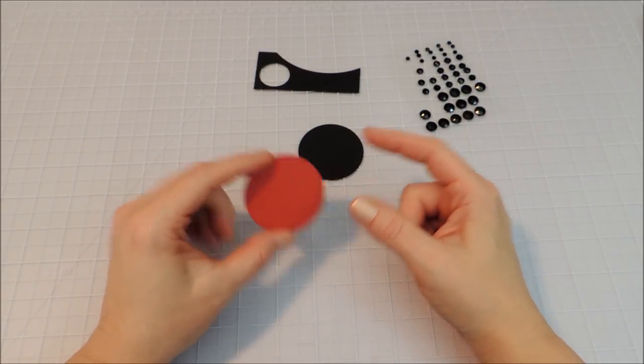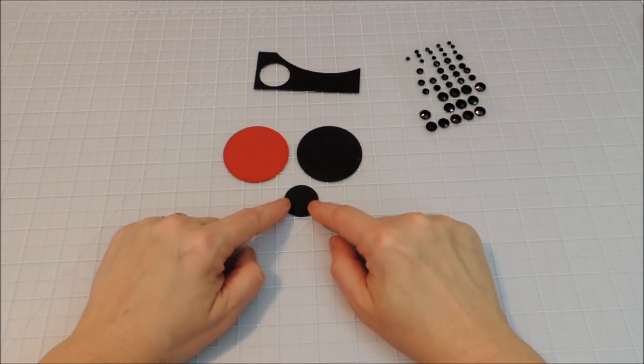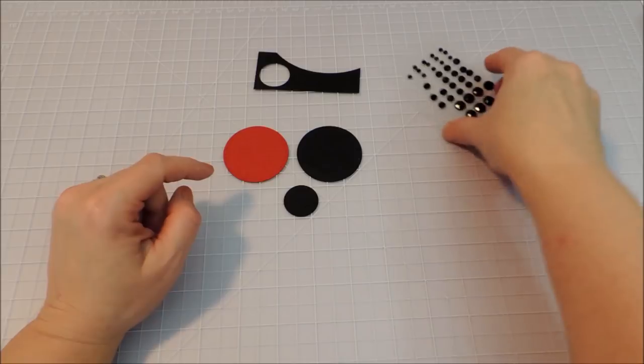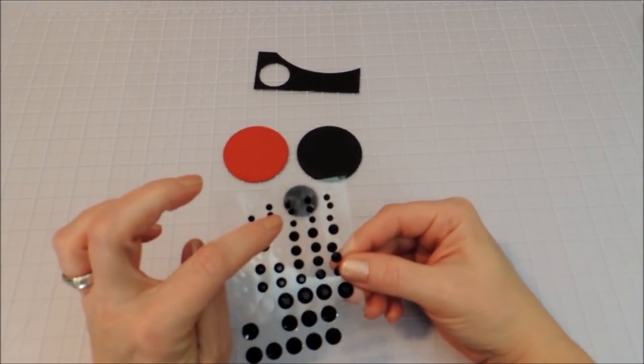So I've got a two inch circle in the red, a two inch circle in black, and then a one inch circle in black. And I've got some black rhinestones, and we're just going to use these for the eyes.